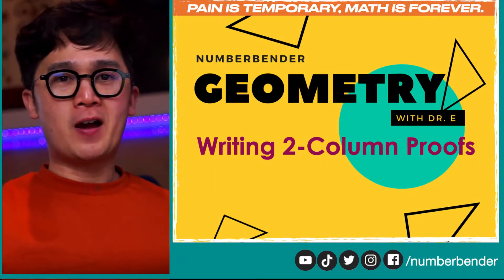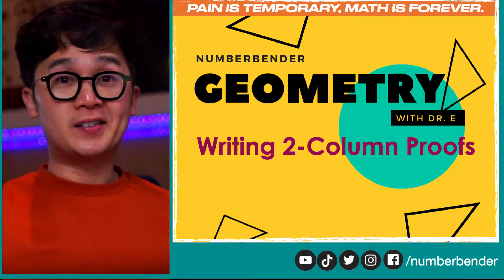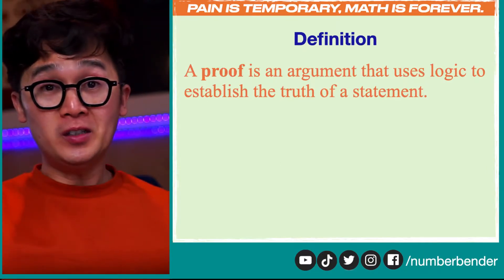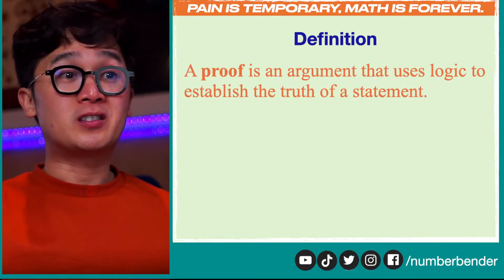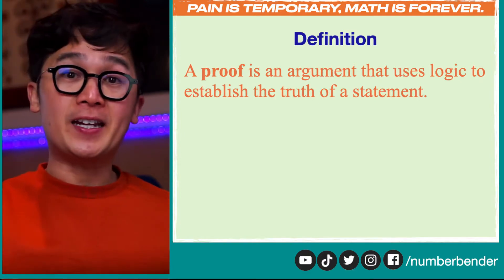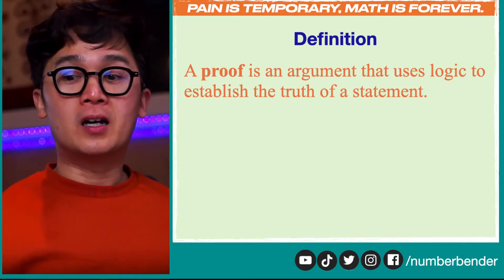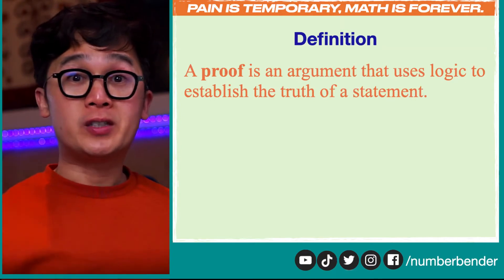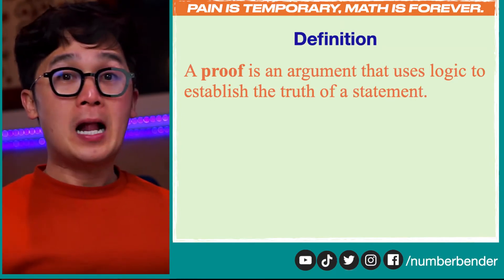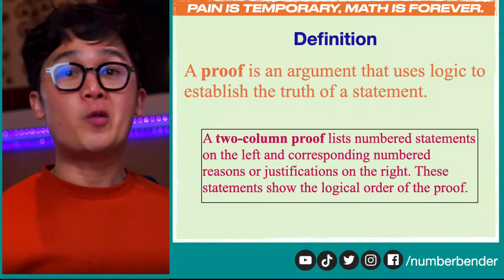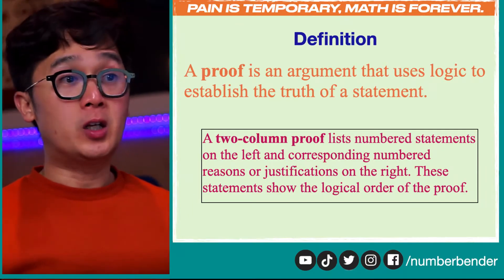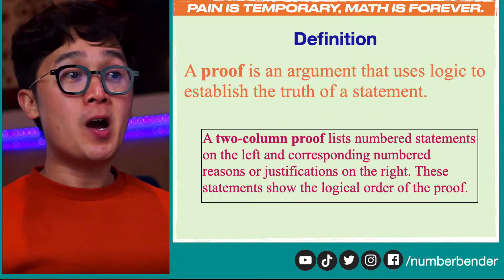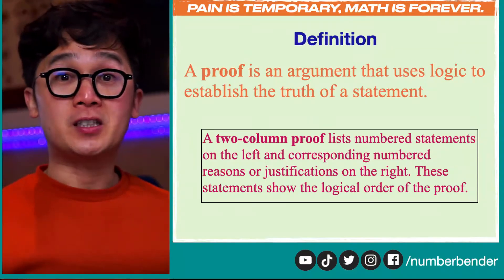One of the challenges in answering problems in geometry is writing a two-column proof, and that's what we're going to be working on today. A proof is an argument that uses logic to establish the truth of a statement. A two-column proof lists numbered statements on the left and corresponding numbered reasons or justifications on the right.